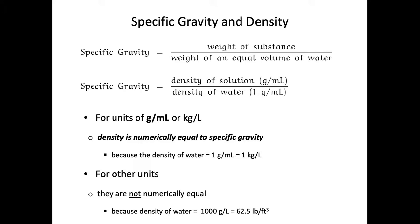In most problems and in pharmacy practice, you can use specific gravity and density interchangeably, so long as the values you're using are in grams per milliliter. So if I give you a specific gravity of 0.9, you can say that substance also has a density of 0.9 grams per milliliter. This allows us to interchange density and specific gravity and treat them as the same value as long as we're in units of grams per milliliter.